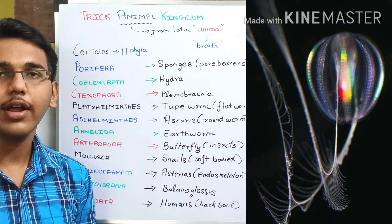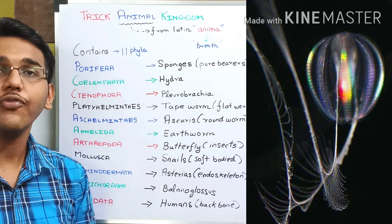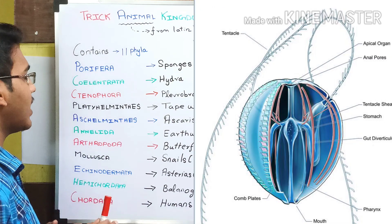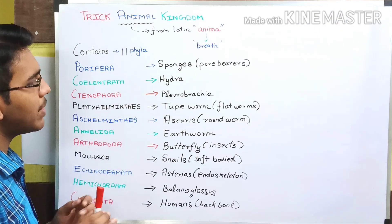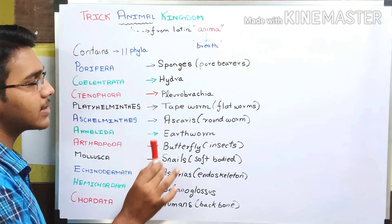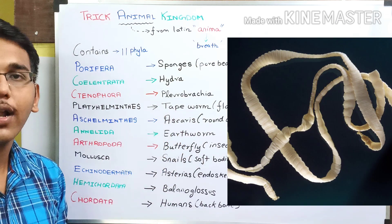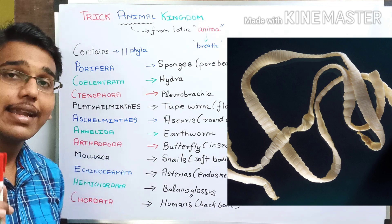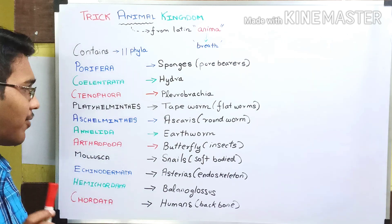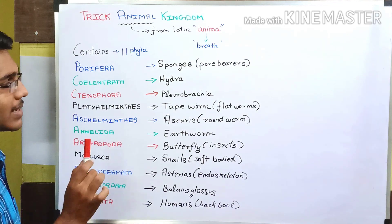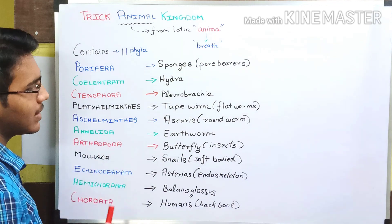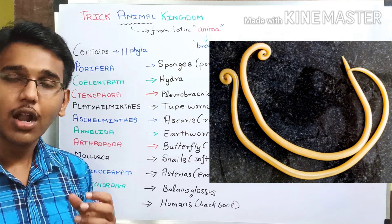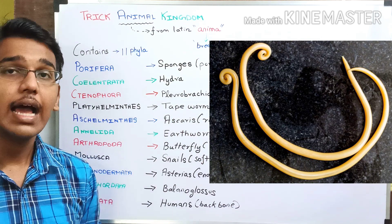Next we have phylum Platyhelminthes. The example of Platyhelminthes is tapeworm. These are also called flatworms because of their appearance. Next we have phylum Aschelminthes. The example of Aschelminthes is Ascaris. These are also called roundworms because of their appearance.